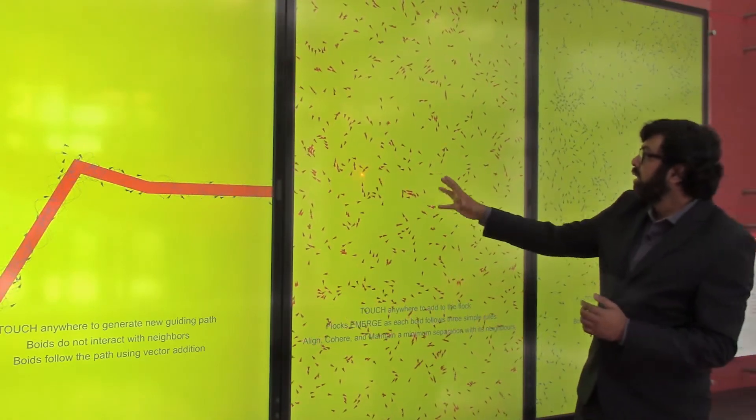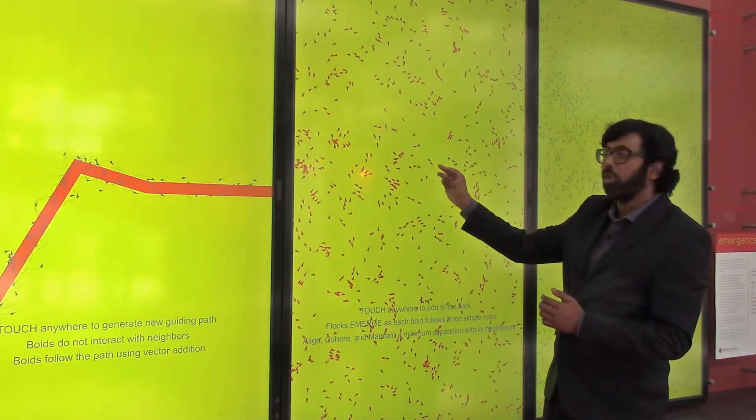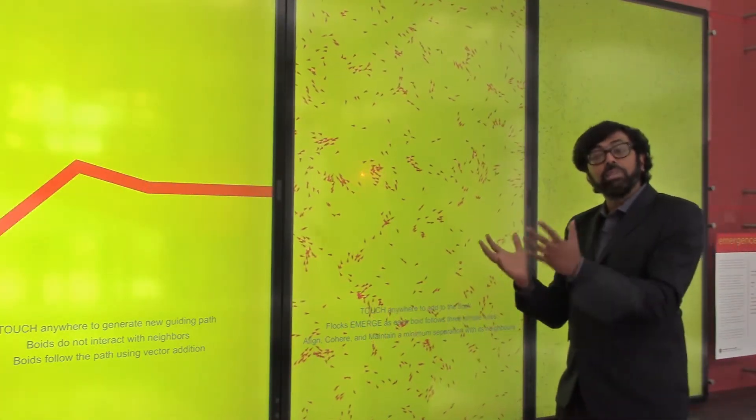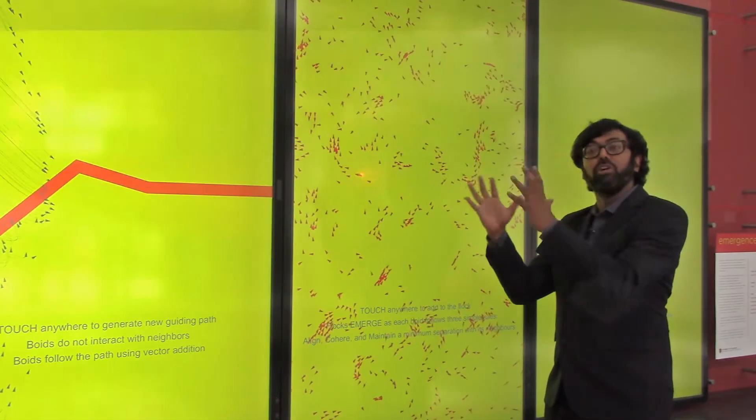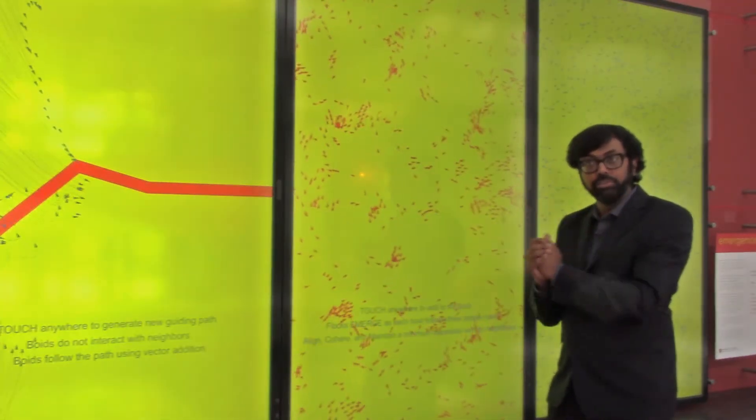And then the patterns that we see, the groups and the flocks that are forming, they actually come out unplanned through the sum of these interactions, these simple rules of interactions.